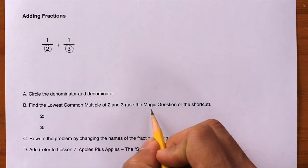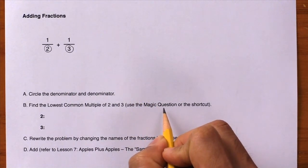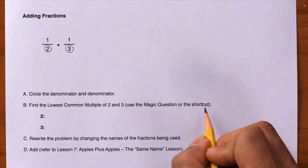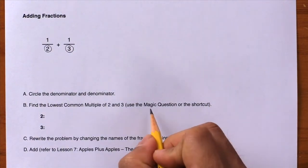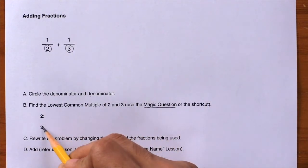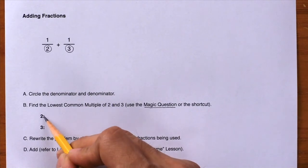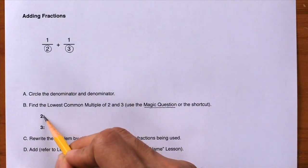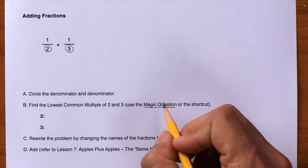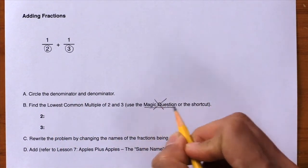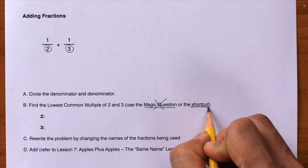Remember, use the magic question first, and if the magic question doesn't work, then use the shortcut. So let's try the magic question first: larger number divided by the smaller number. Can you do three divided by two evenly? The answer is no, so the magic question doesn't work here. We have to use the shortcut instead.